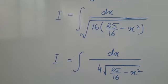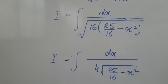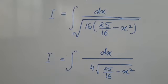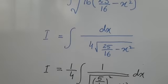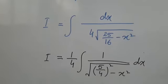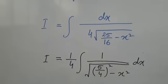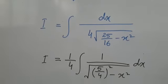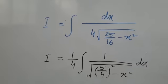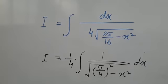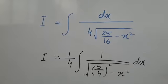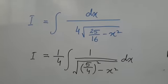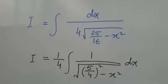We rewrite the integral as dx over 4·√(25/16 − x²). Recognizing that 25/16 = (5/4)², this becomes √((5/4)² − x²) under the root.